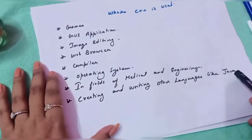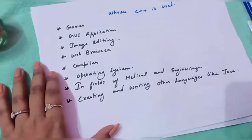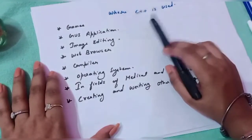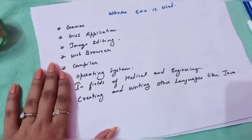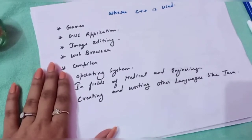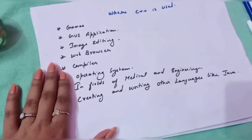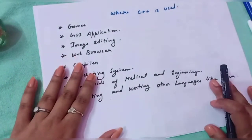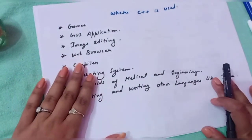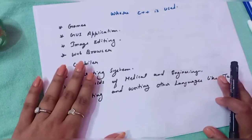The best point is that C++ is used in creating and writing other languages — for example, Java is also created using C++ in the background. So today we have discussed three major topics: the terms used with programming languages, advantages of learning C++, and where C++ is used in the real world. I hope you all have understood. Please go through the video again and try to understand it. Thank you.